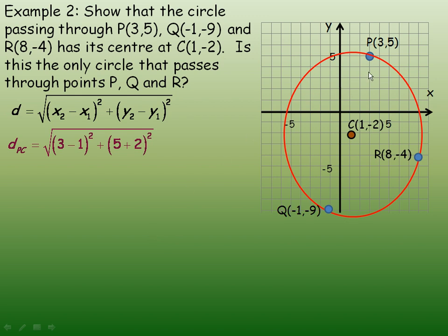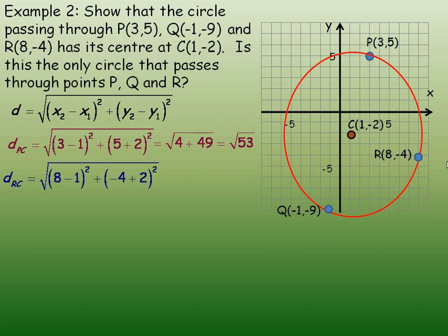The distance from P to C: we compute (3 minus 1) squared plus (5 minus negative 2) squared. That is 2 squared plus 7 squared, which is 4 plus 49, giving root 53. For R to C: (8 minus 1) squared plus (negative 4 minus negative 2) squared gives 7 squared plus negative 2 squared, which is 49 plus 4, again giving root 53.